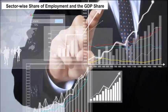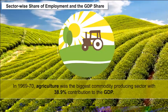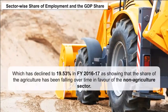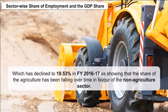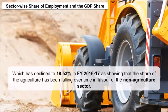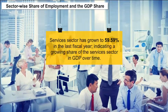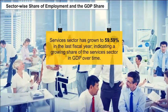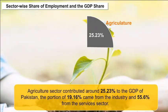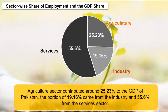Sector-Wide Share of Employment and GDP Share: In 1969–70, agriculture was the biggest commodity-producing sector with a 38.9% contribution to GDP, which has declined to 19.53% in financial year 2016–17, showing that the share of agriculture has been falling over time in favour of the non-agriculture sector. The share of the services sector has grown to 59.59% in the last fiscal year. In 2016, the agriculture sector contributed around 25.23% of Pakistan's GDP, with 19.69% from industry and 55.6% from the services sector.